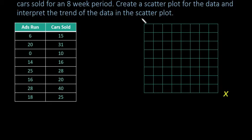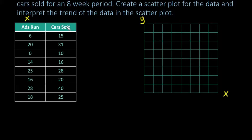X is always going to be our explanatory variable and Y is always going to be our response. The response is the one that depends on the other — in algebra we call them the independent and dependent variables. Looking at ads run versus cars sold, it makes more sense to say X is the number of ads, which influences how many cars are sold, rather than the other way around. So we'll set ads run as X and cars sold as Y.